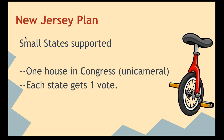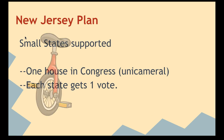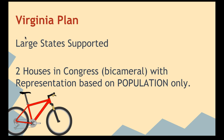Those higher population states said, wait, we have more people, we should have more of a say. So Virginia suggested a different plan: two houses, making it bicameral — bi means two, like a bicycle — with representation based on population only. So those states that have a larger population are going to get more of a say in Congress.